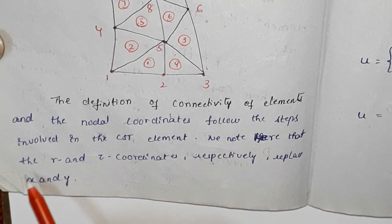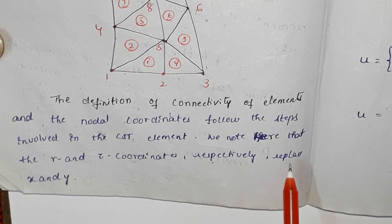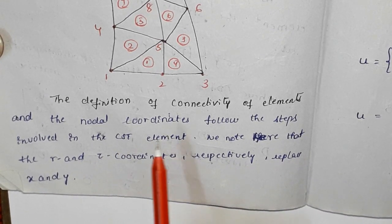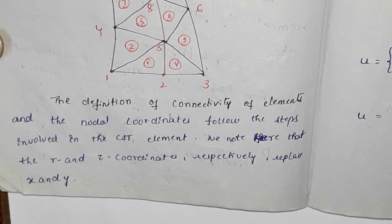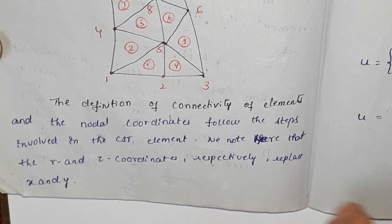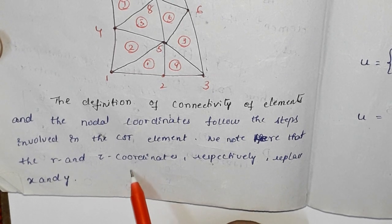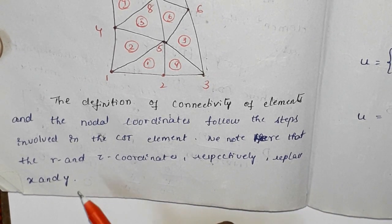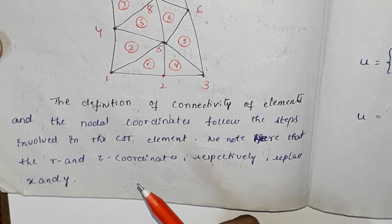We know that the R and Z coordinates respectively replace X and Y from the CST formulation. So we have the element connectivity and nodal coordinates. We have already derived the CST derivation, and the same approach applies here. In terms of R and Z coordinates, we can replace X and Y — where CST used X and Y, here we have R and Z.